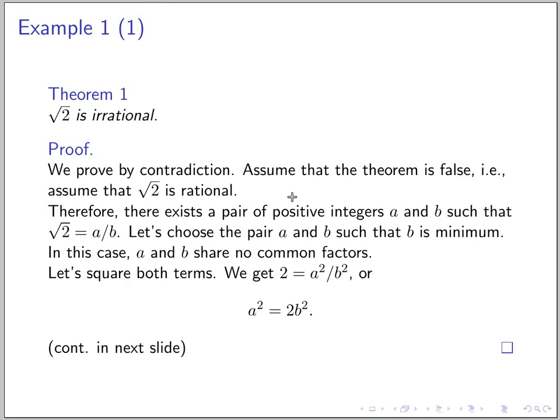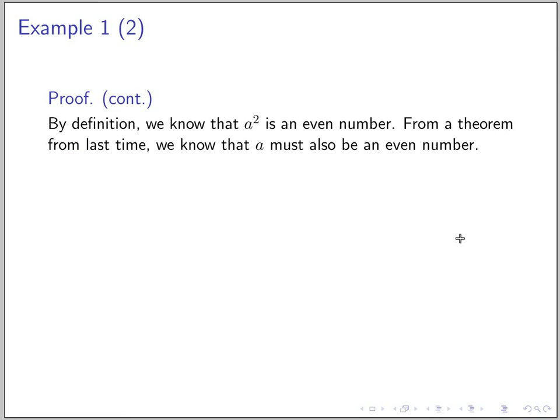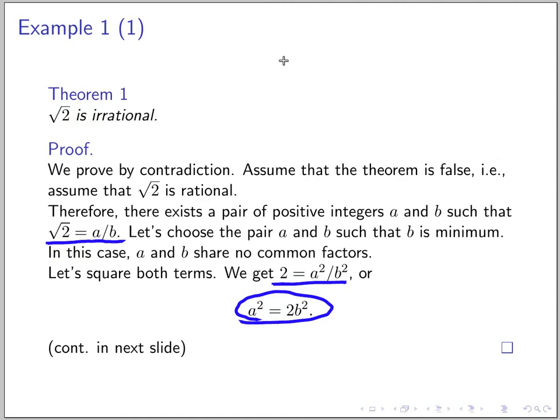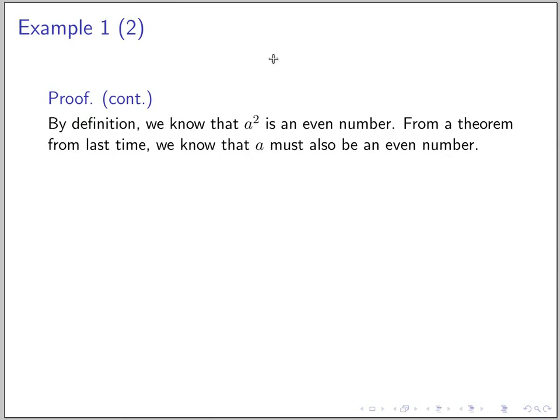So let's square both terms. From square root 2 equals a over b we square it and we get this and with some manipulation we get this. Can you see anything? All right so let's move on.